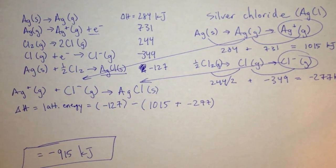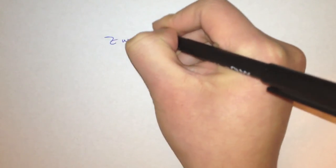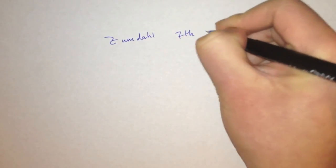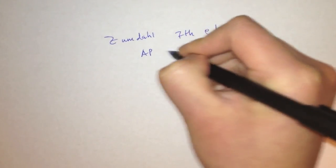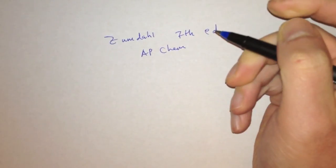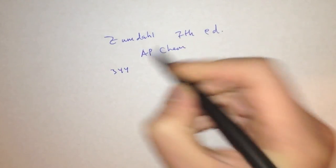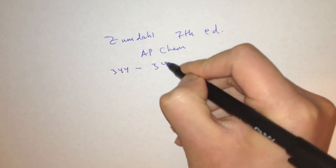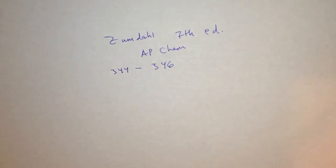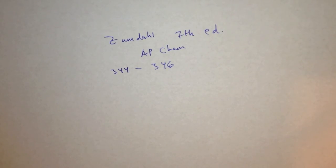I hope you've learned a lot by watching this video. If you feel like you haven't learned enough, you can review this in the Zumdahl 7th Edition AP Chemistry book, beginning on page 344 and ending around page 346. This is part of the Bonding General Concepts chapter, which is chapter 8. Thanks for watching.